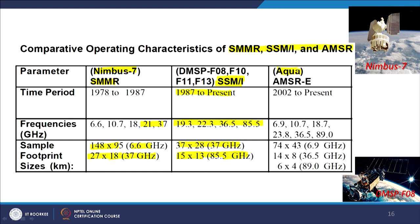The Terra and Aqua satellites both carry MODIS sensors, but here we are discussing the AMSR sensor. Terra and Aqua became operational in 2002. Since then, the AMSR has continued operating, with frequencies mixed compared to SMMR and SSMI. The improvement in resolution is continuous — this sensor now provides relatively higher spatial resolution compared to data from between 1978 and 1987.